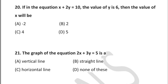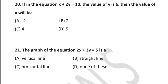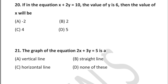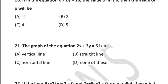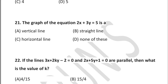Question 21: the graph of the equation 2x + 3y = 5 is a — vertical line, straight line, horizontal line, or none of these. Students, hopefully you are finding my videos useful. If so, please share and subscribe to the channel. I'll be posting the solutions soon and also other subject MCQs.